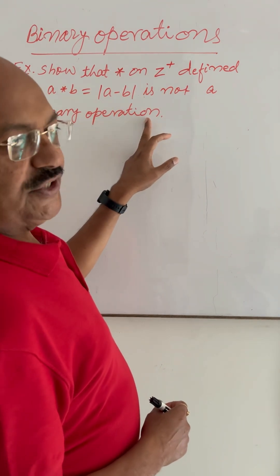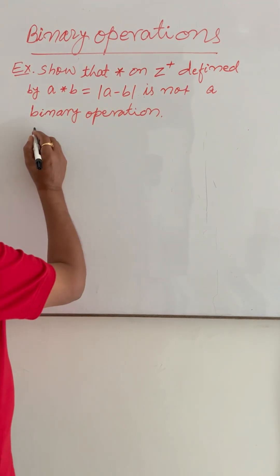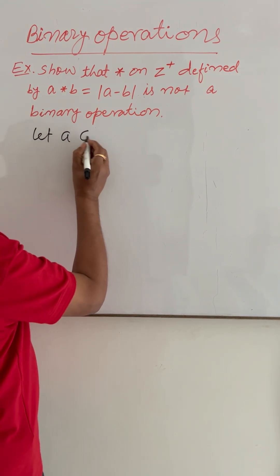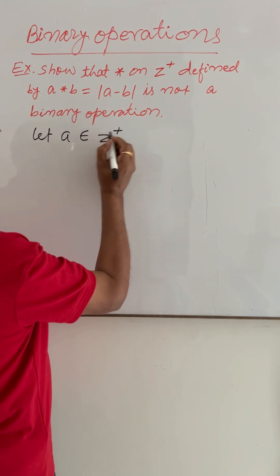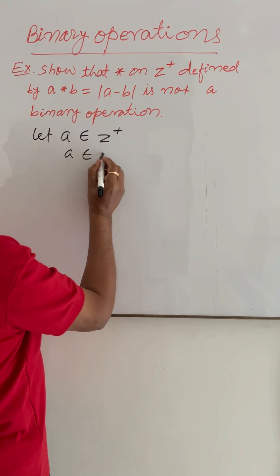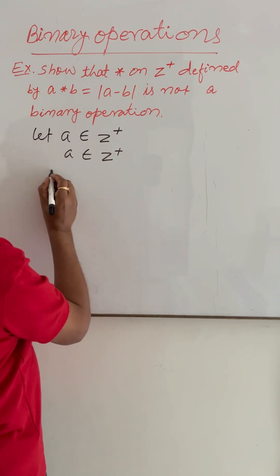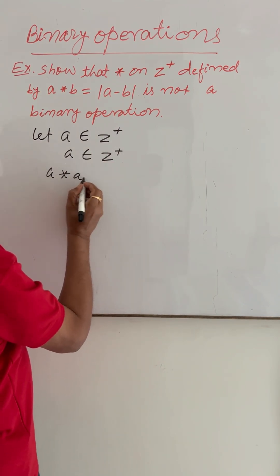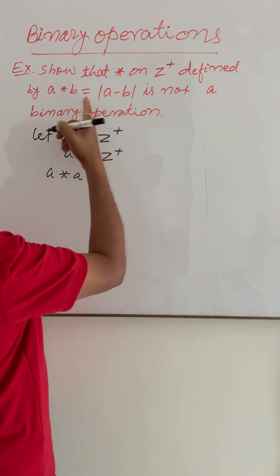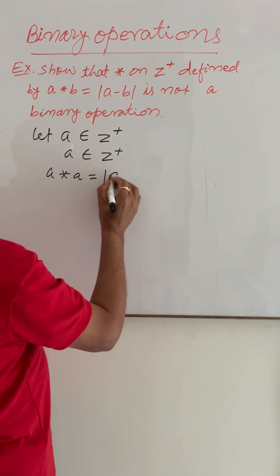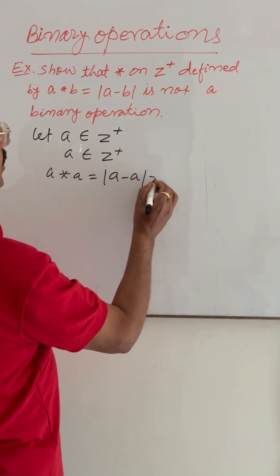So let a belong to Z plus. Again, we can write a belong to Z plus. So a operation a is equal to, by this given definition, mod of a minus a, which is zero.